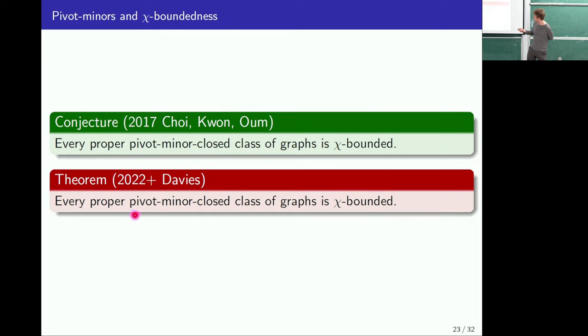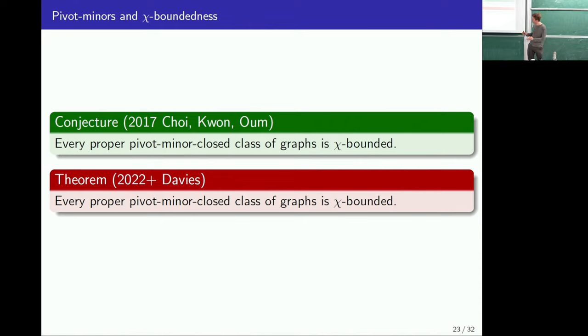I want to talk a little bit about this proof, though it's definitely more complicated than the Erdős-Hajnal one. Most of what I'll discuss is really more general chi-boundedness methods — there won't be anything specialised to pivot minors here, but this is exactly the kind of stuff we use in the pivot minor proof. I'll start off with a brief overview of what's really the most classical kind of argument you see in chi-boundedness proofs: the leveling argument.